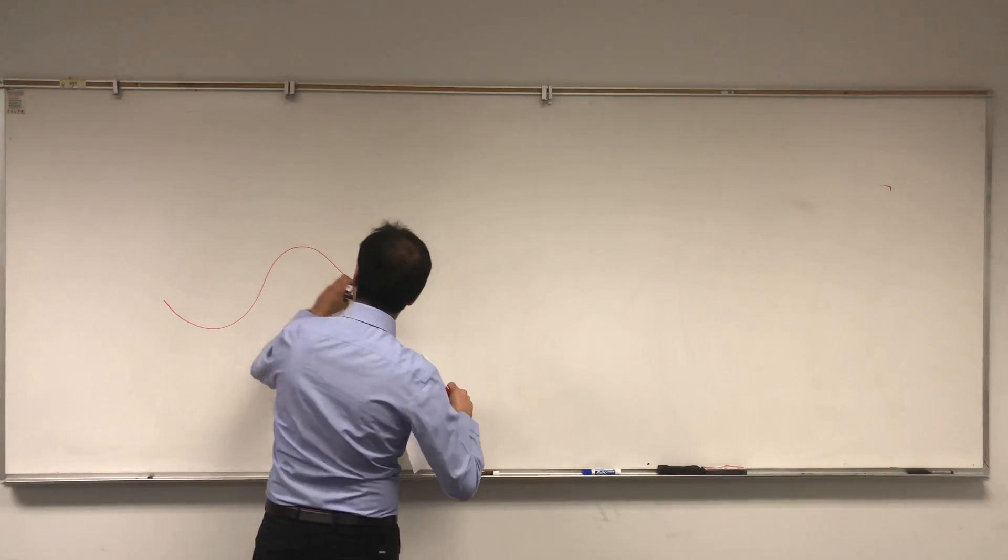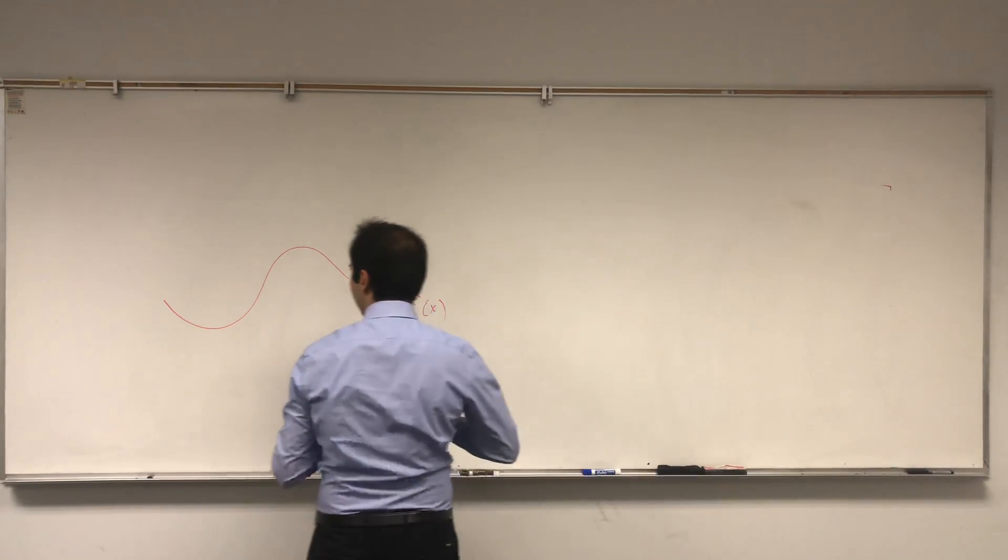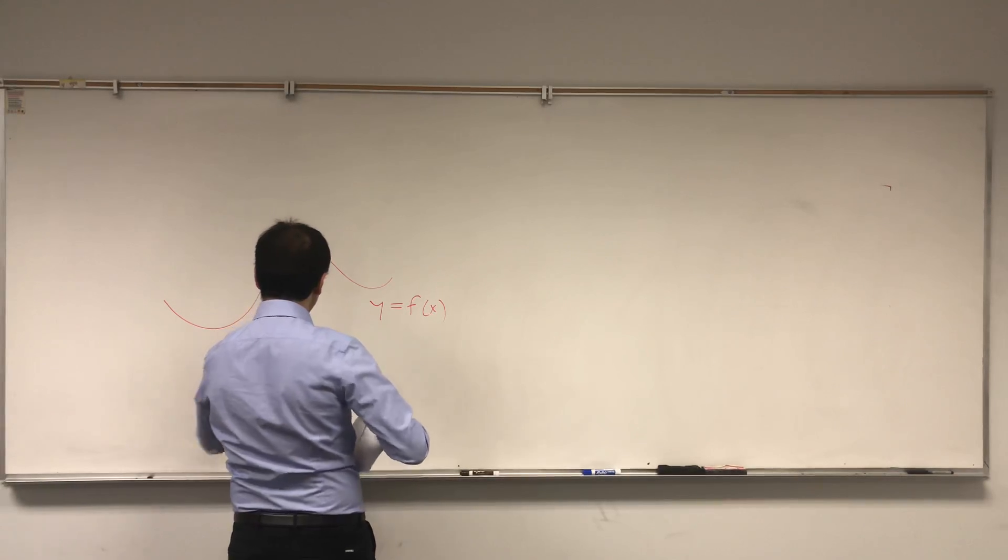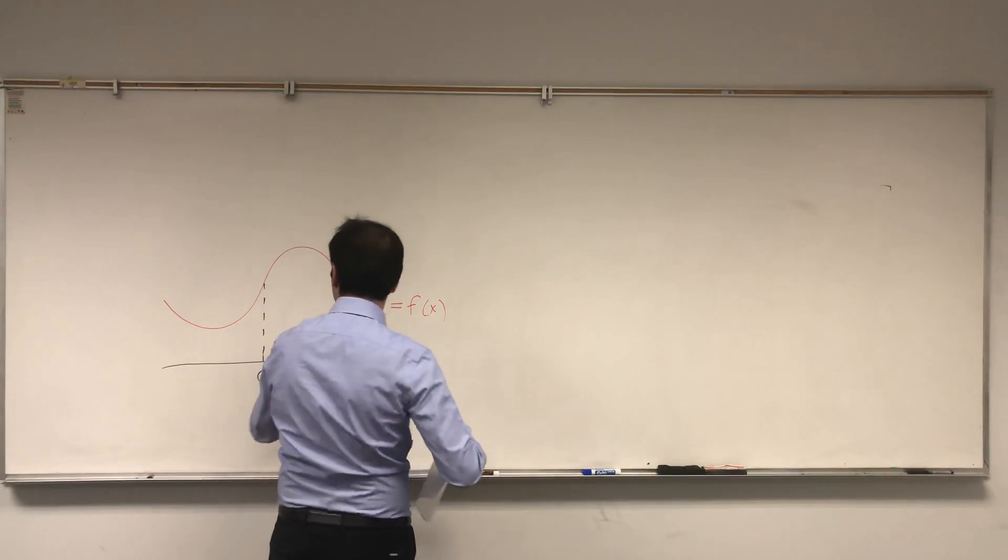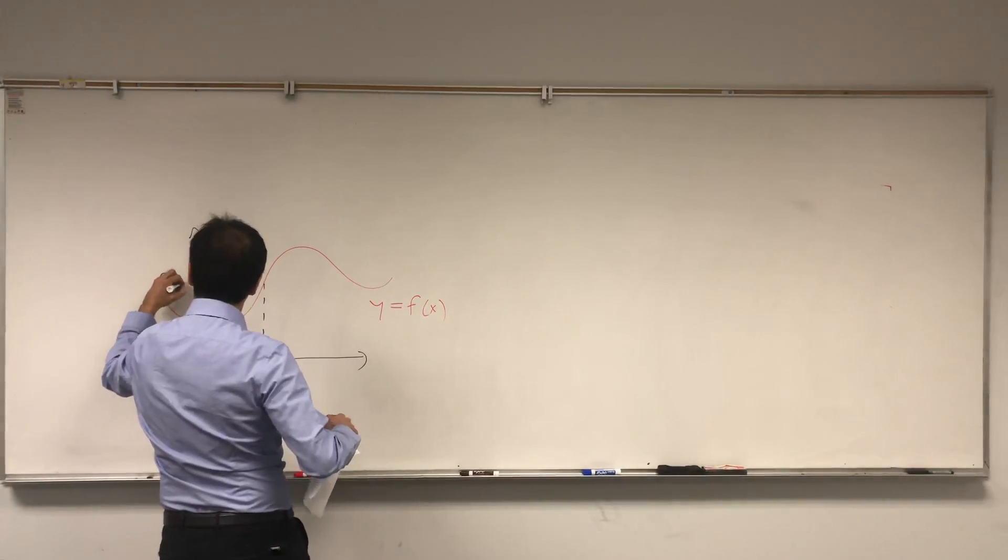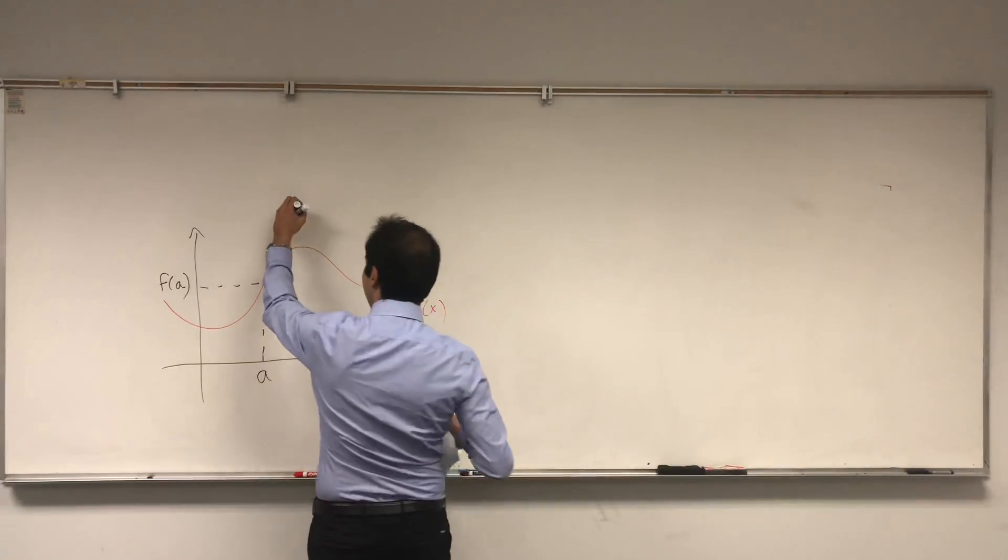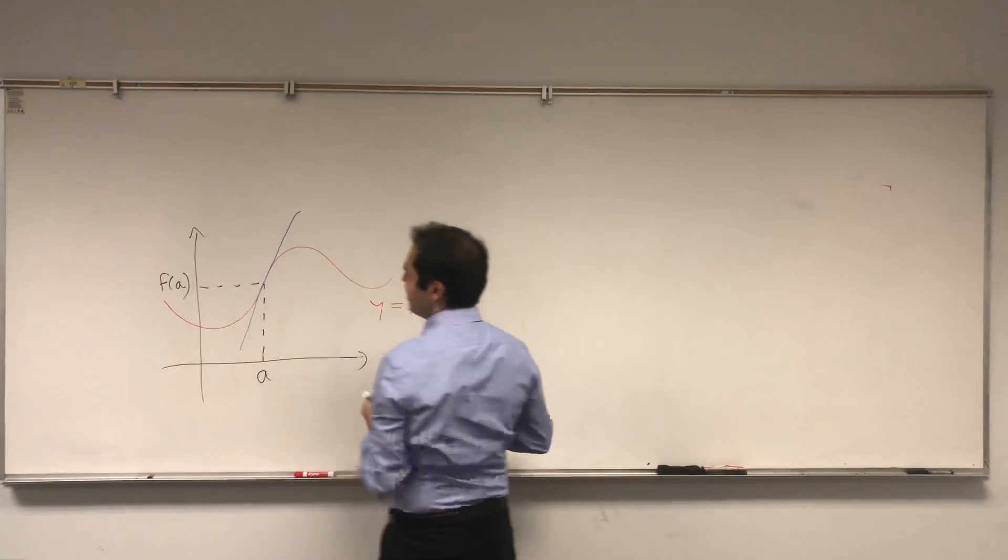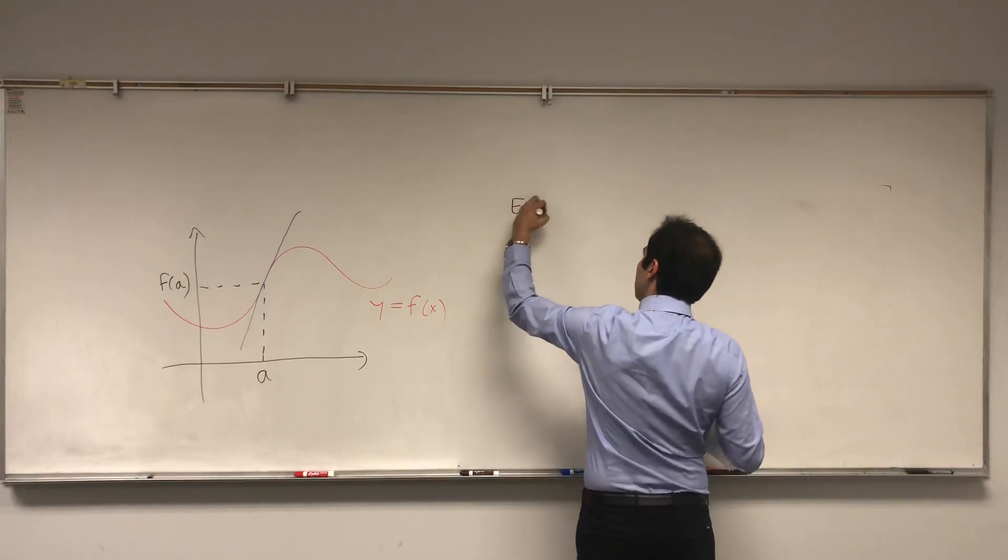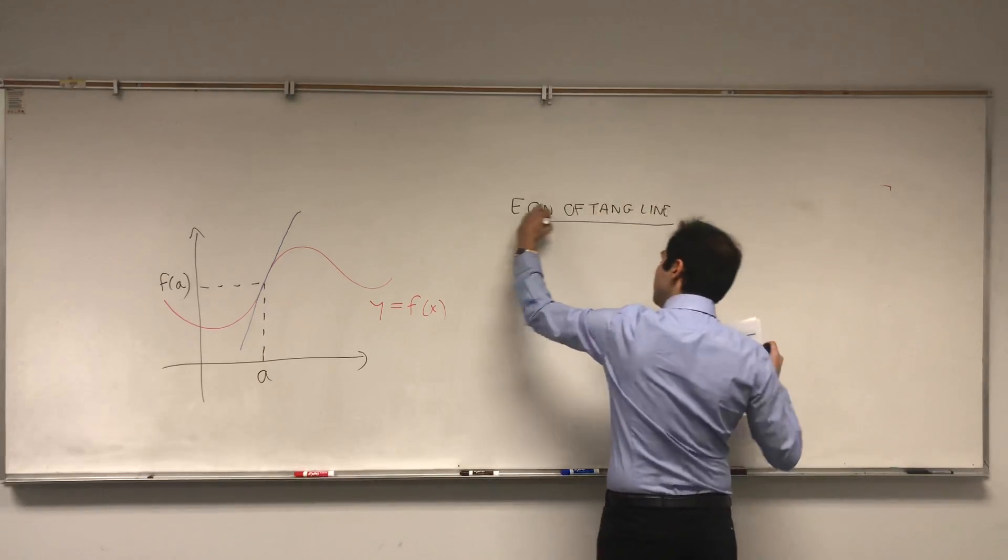So let me remind you how to find the equation of the tangent line of f at a certain point. Suppose you have a function f that wiggles like that, so y equals f of x. And at a certain point, let's call it a. So this is a, and this is f of a. Then remember, f has a nice tangent line defined at a, most functions do. And the equation of that tangent line...